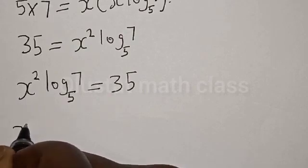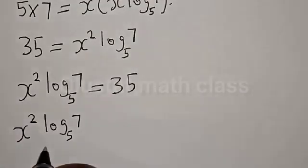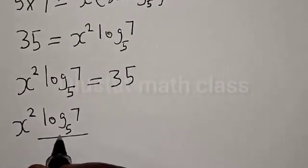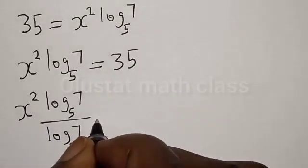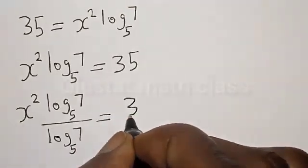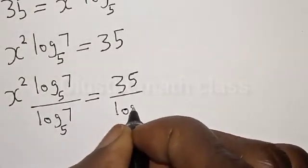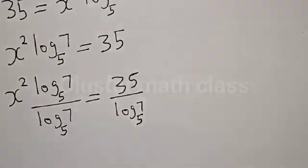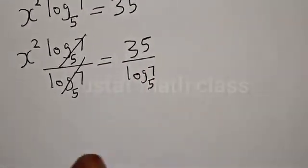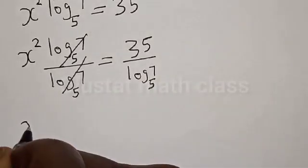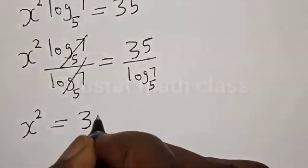We have x squared times log 7 base 5, divided by log 7 base 5, is equal to 35 divided by log 7 base 5. These cancel, so we have x squared is equal to 35 divided by log 7 base 5.